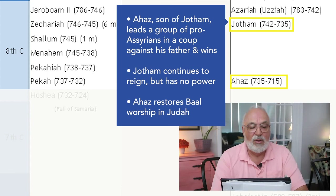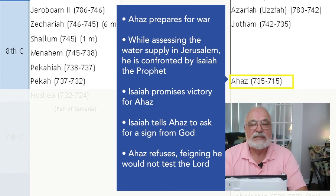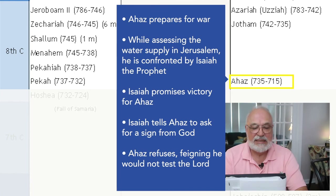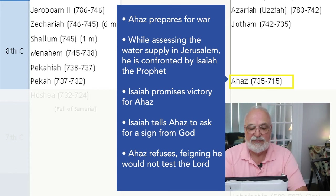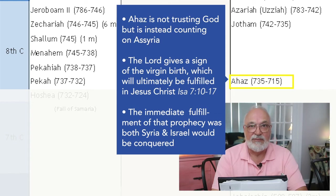Ahaz becomes king and is constantly harassed by former allies because he is unwilling to fight Assyria. Finally, Rezin of Syria and Pekah of Israel come against him. Ahaz prepares for war. While assessing the water supply of Jerusalem, he is confronted by Isaiah the prophet who promises that he will have victory. Isaiah tells Ahaz to ask for a sign, but he refuses, feigning he would not test the Lord — though he is really counting on Assyria. The Lord does give a sign.